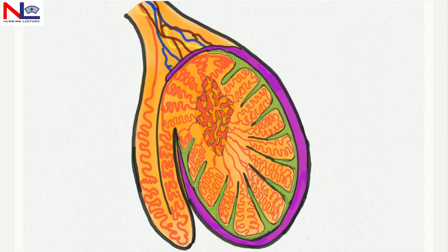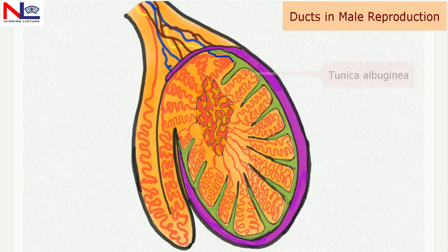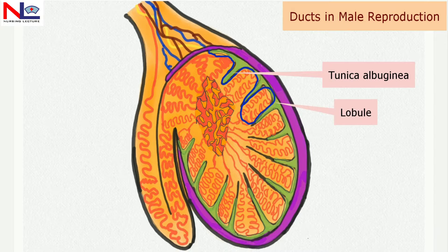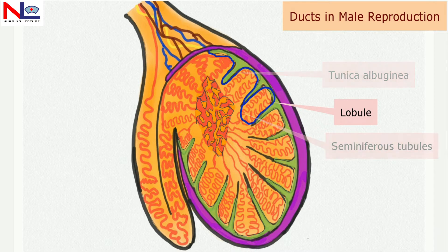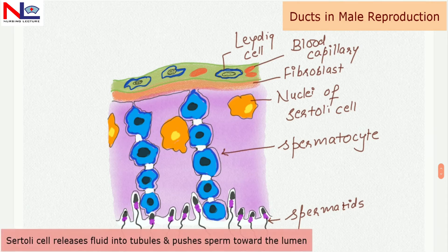Here we have a figure of the testes. The internal layer of the testes is the tunica albuginea, which forms septas internally and creates lobules. Within each lobule there are one to three tightly coiled seminiferous tubules. Within the wall of the seminiferous tubules there are Sertoli cells, which produce fluid.